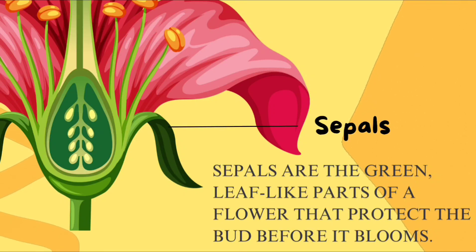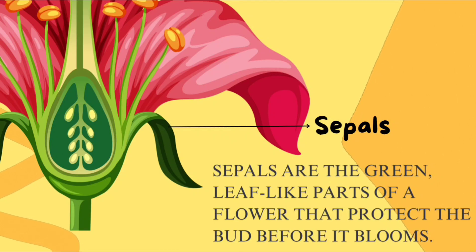This part of a flower is called sepals. Sepals are the green, leaf-like parts of a flower that protect the bud before it blooms.